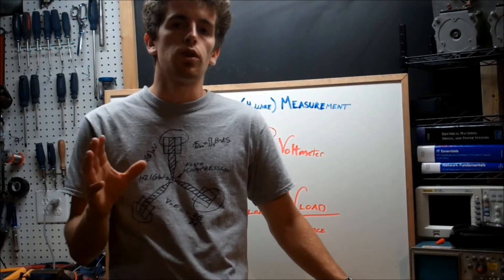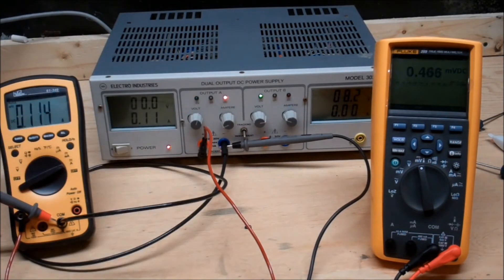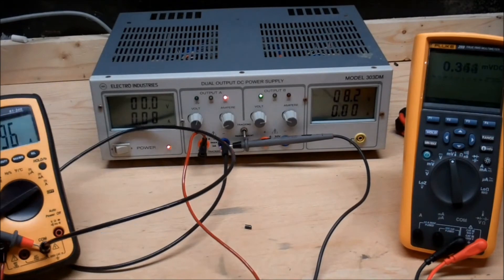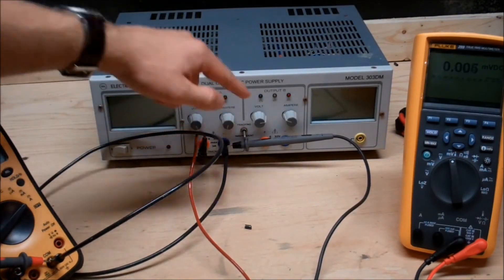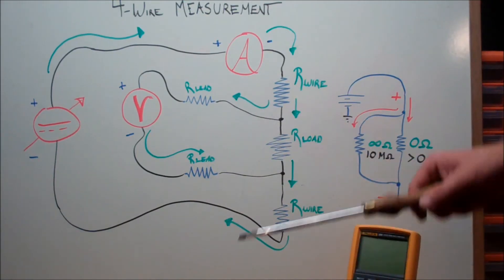So I paused the video at a certain point just to actually get the two readings simultaneously, and what I determined was I got 0.000397 for the voltage and 0.107 for the amps. I plugged that into the formula and I got 0.0037 ohms of resistance. So that right there is the resistance of the wire.